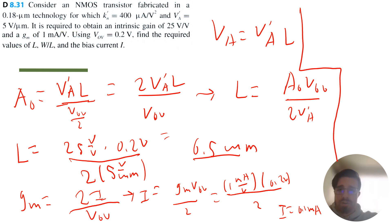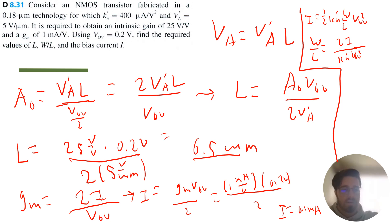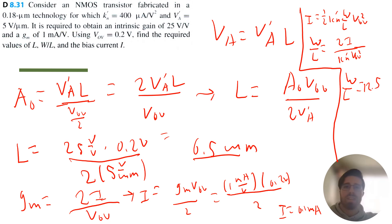Lastly, to find W/L we leverage the drain current equation: I equals one-half times Kn' times (W/L) times V overdrive squared. Rearranging gives W/L equals 2I divided by Kn' times V overdrive squared. Substituting 2 times 0.1 milliamps divided by 400 microamps per volt squared times (0.2)² gives W/L equals 12.5. That takes care of this problem.